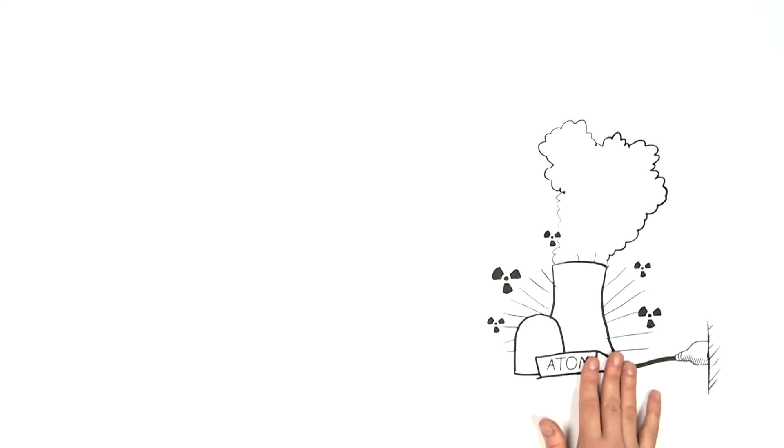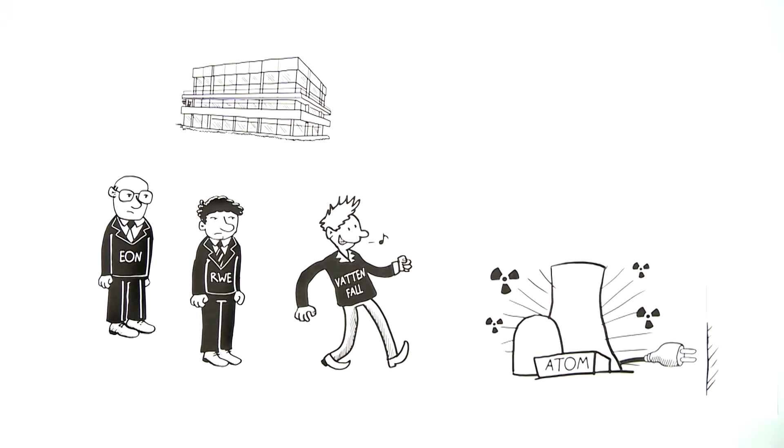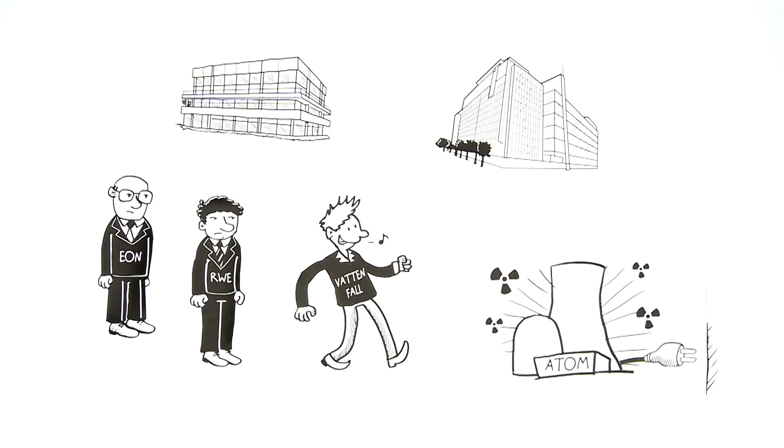The response to the nuclear phase-out is a case in point. Energy companies are not happy that Germany has opted to abandon nuclear energy, and so E.ON and RWE have launched legal proceedings at the German Federal Constitutional Court. If this wasn't enough, the Swedish company Vattenfall is appealing at a private ISDS arbitration tribunal, demanding 3.7 billion euros in compensation.